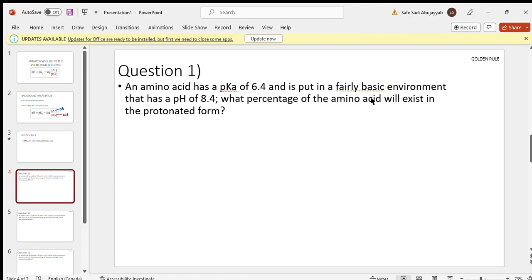Now let's go through this nice and simple question. Question 1: An amino acid has a pKa of 6.4 and is put in a fairly basic environment that has a pH of 8.4. What percentage of the amino acid will exist in the protonated form? You can see the words 'amino acid' can really be replaced by anything - any kind of name of a specific amino acid, any molecule. It doesn't really matter; the same concept happens over and over again.